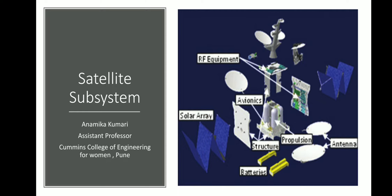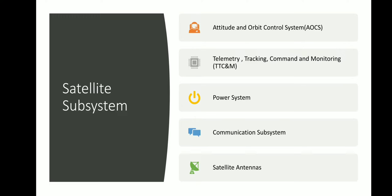Hello and welcome back to the satellite communication lecture series. Today we are going to start with our next module, that is satellite subsystems. Basically, satellite subsystems are all those parts of the satellite which are meant to support the transponder in space. The basic aim of putting a satellite in space is to receive the signal from the earth and retransmit it such that the communication distance between two points is increased. These are the various satellite subsystems that we are going to study in detail in this module.